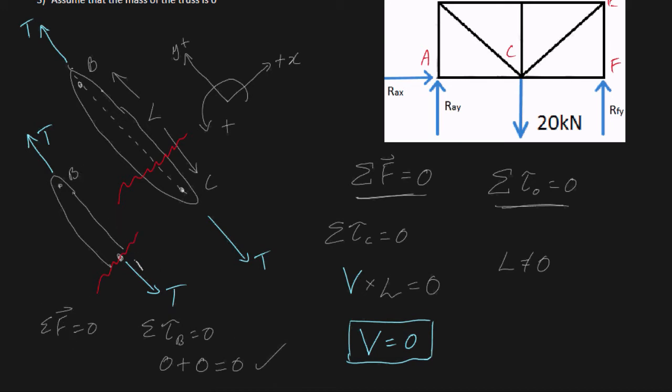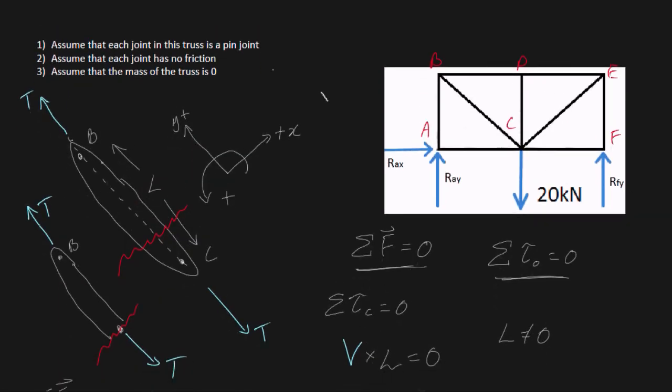So this is a formal proof describing why the internal forces within every simple truss must be purely in the axial direction, assuming that these assumptions are true. I hope that makes sense, guys. And I'll catch you in the next video.